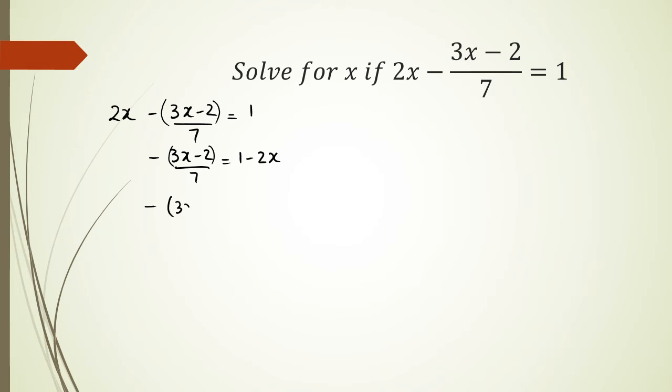I'm going to put it as -(3x - 2)/7. I know that 7 is going to go to the other side, so it'll be 7 times (1 - 2x). I need to expand the brackets, so I have -3x + 2.